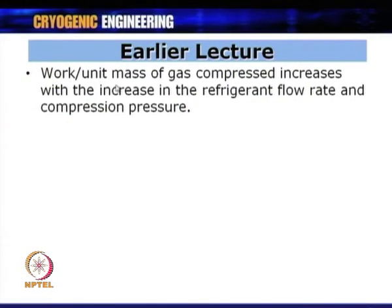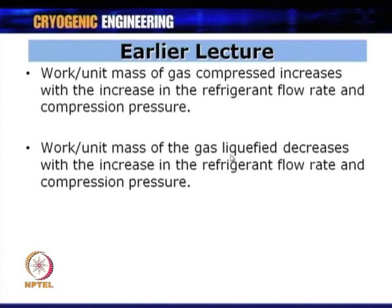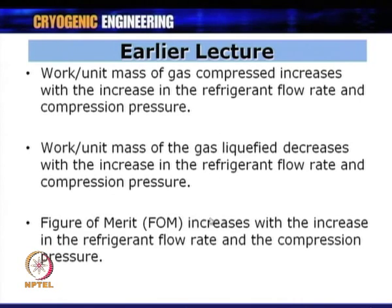Work per unit mass of gas compressed increases with the increase in refrigerant flow rate and compression pressure, since we now have two compressors. However, work per unit mass of gas liquefied decreases with the increase in refrigerant flow rate and compression pressure. This is the key objective — to decrease W/ṁ_f, the work per unit mass of gas liquefied. The figure of merit also increases with the increase in refrigerant flow rate and compression pressure.